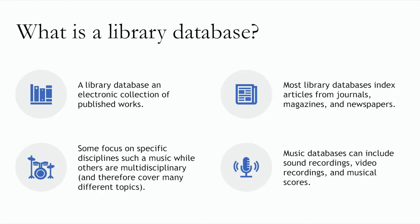When you're looking for journal articles, a good place to start is a library database. A database is an electronic collection of published works. The library pays for access to databases, which means you will find content that's not necessarily available freely on the internet. Most library databases include journal articles, and sometimes they include magazines, ebooks, newspapers, and other types of scholarship.